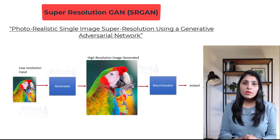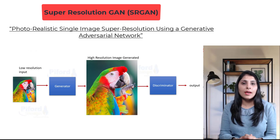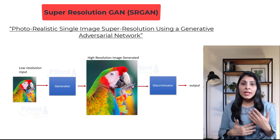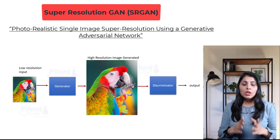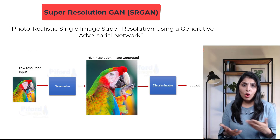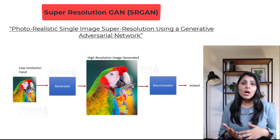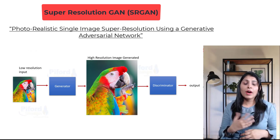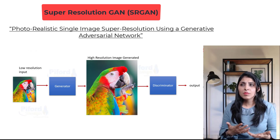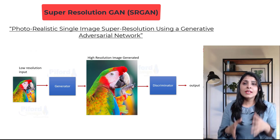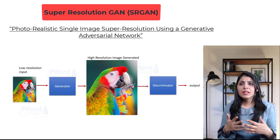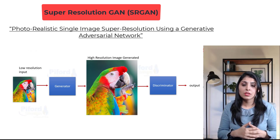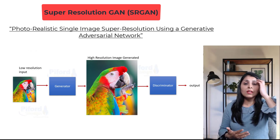Hello everyone, my name is Arohi and welcome to my channel. In this video I'll talk about SR-GANs, Super Resolution Generative Adversarial Networks. Super resolution is a process of improving or enhancing image quality using various techniques. Before SR-GANs, techniques like CNNs (Convolutional Neural Networks) could produce a high resolution image from a low resolution image, but in some cases they were incapable of recovering finer details and would generate blurry images. SR-GANs resolved these issues and provided better high resolution images.